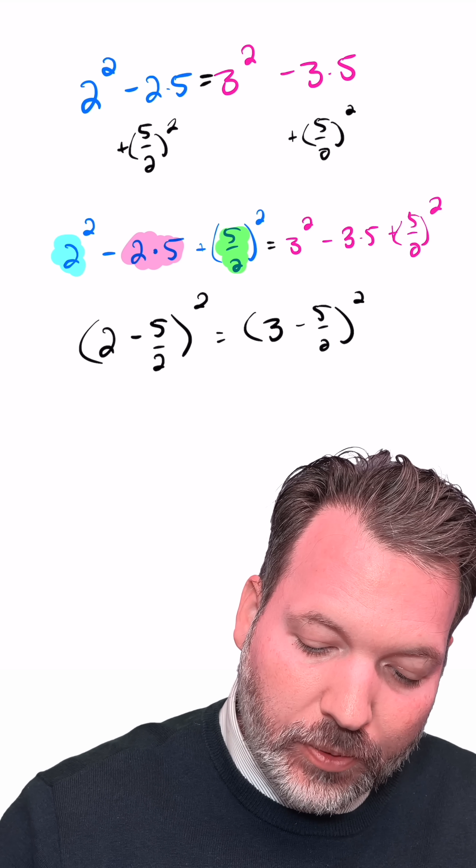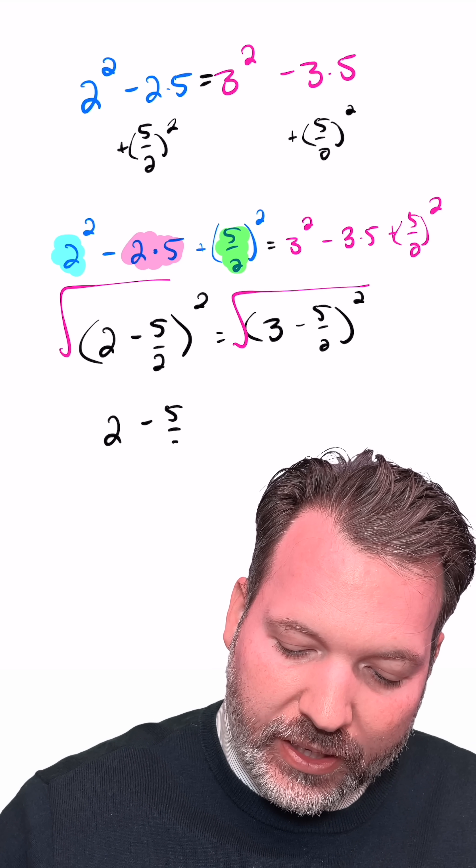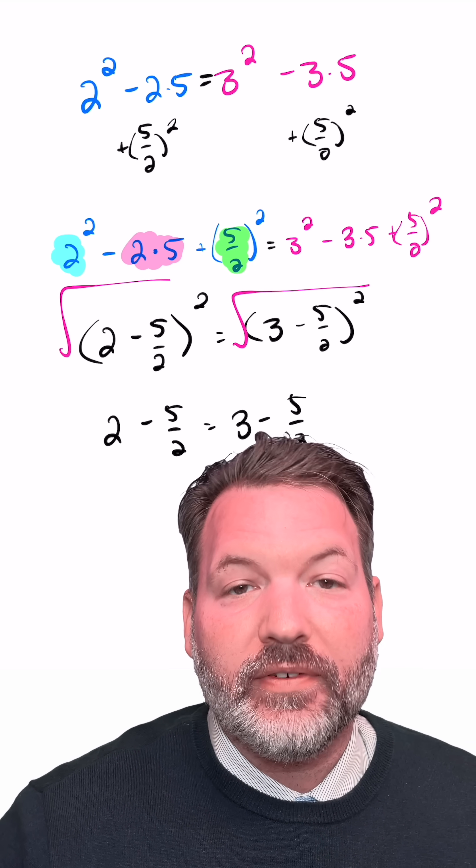Since both of these sides are being squared, let's go ahead and get rid of the square. And that leaves us with 2 minus 5 halves equals 3 minus 5 halves.